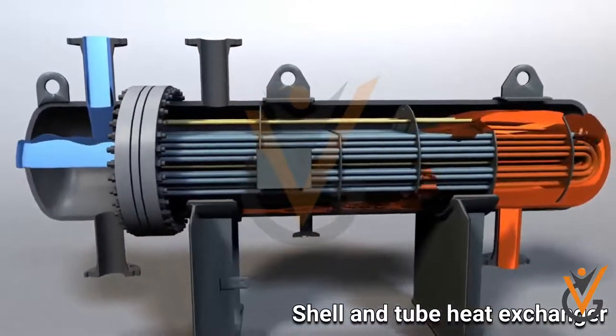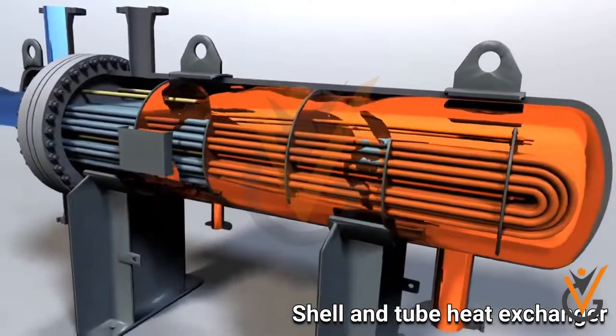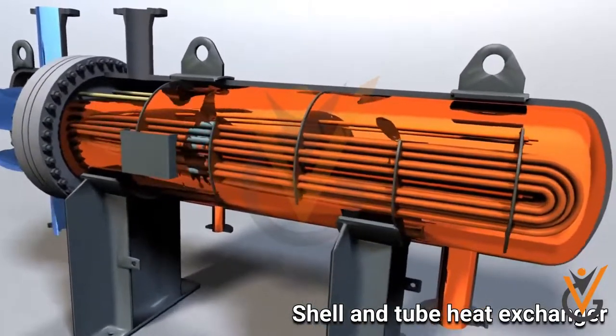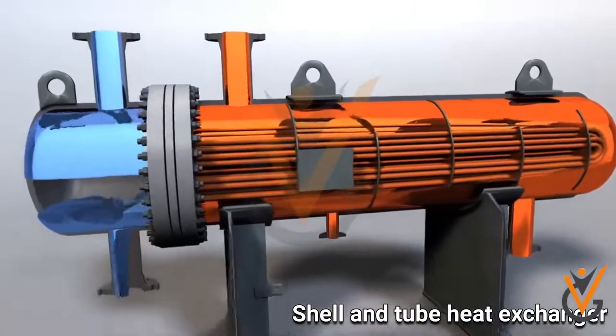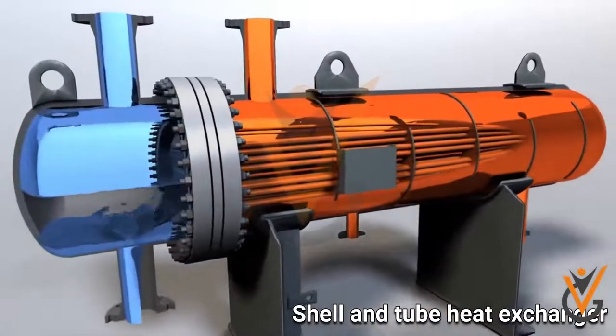The cooling of the lube oil is done by sea water in the shell and tube heat exchanger. In this heat exchanger, lube oil flows through the shell and sea water flows through the tubes.